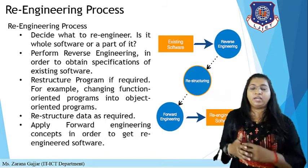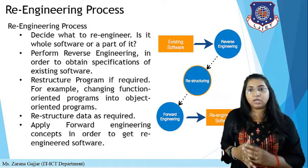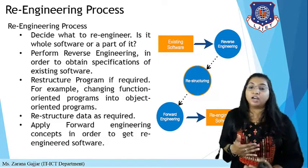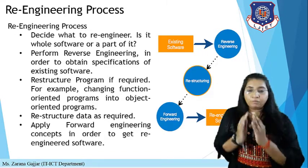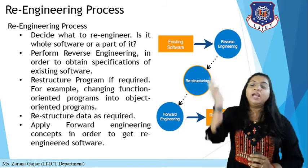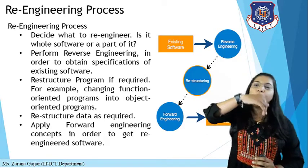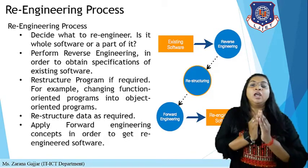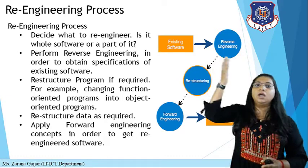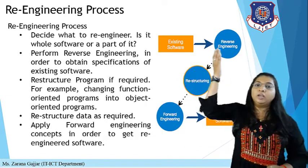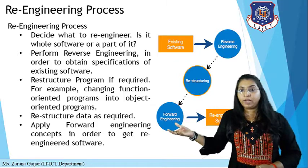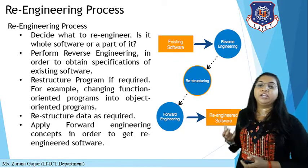If any changes are required in the data, you restructure the data and apply the forward engineering concept to get the re-engineered software. To perform re-engineering: you check the existing system using reverse engineering, then you restructure it, and then you perform forward engineering. The output of the forward engineering process is your re-engineered product. The overall process: existing software → apply reverse engineering → restructure → perform forward engineering → re-engineered software.